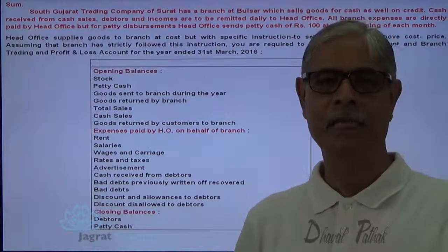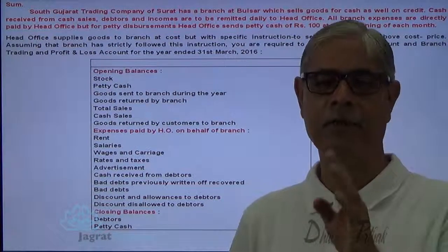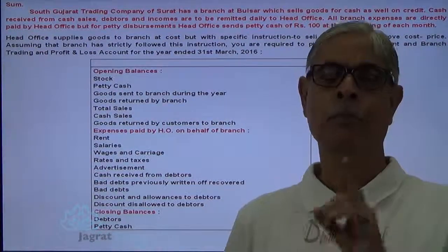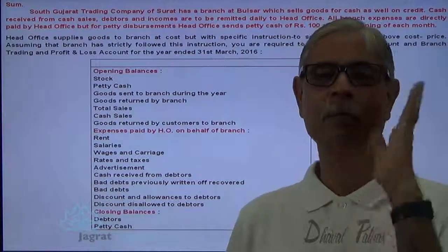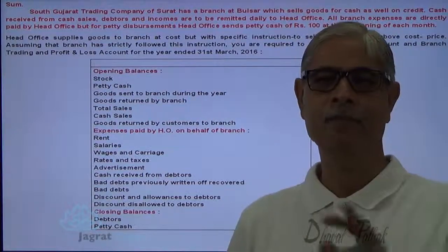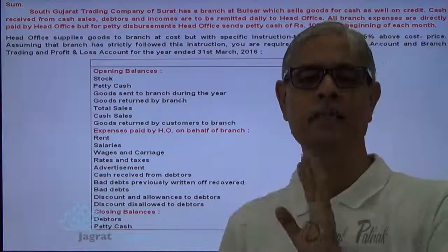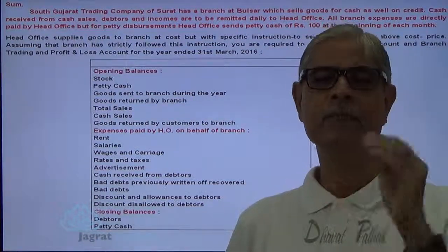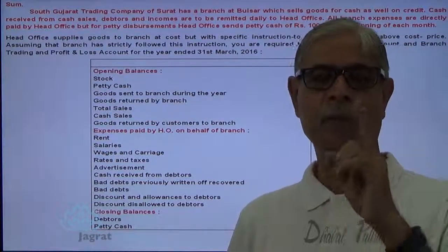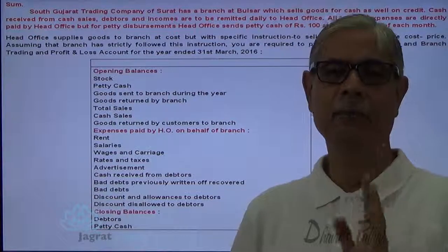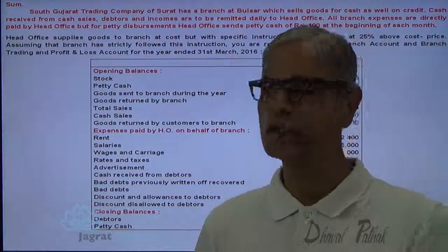When this type of sum is there — wherein an instruction to sell goods at a specific percentage is given to the branch and the instruction is strictly followed — remember: out of four things, one thing should be missing in the sum. Either opening stock is missing, or closing stock is missing, or goods sent is missing, or goods return is missing. Sometimes total sales may also be missing, because when you can work out the profit, any one of these four or five things will be missing.